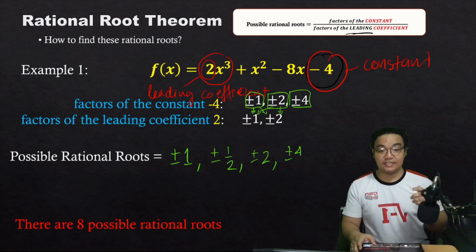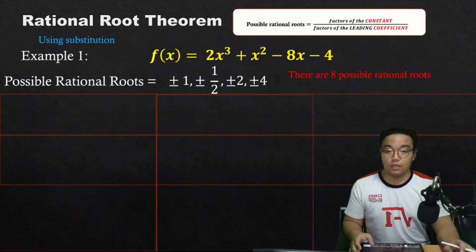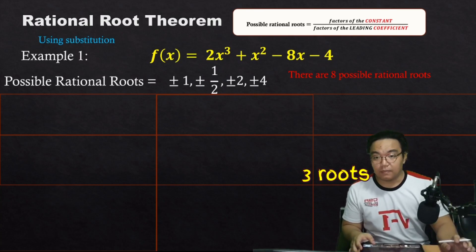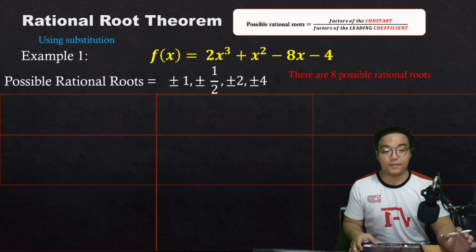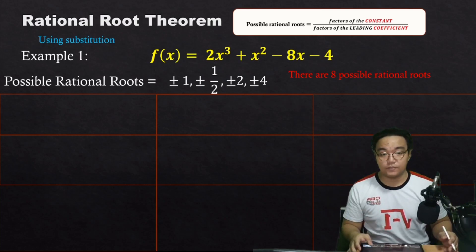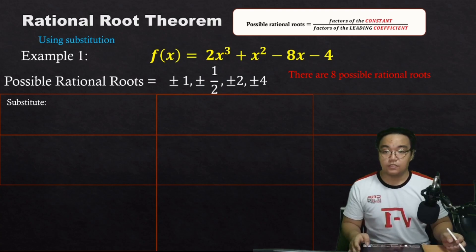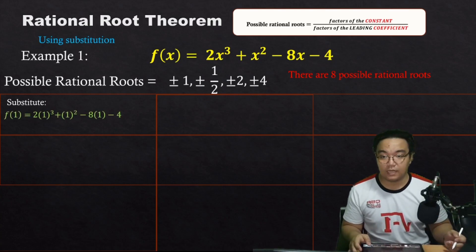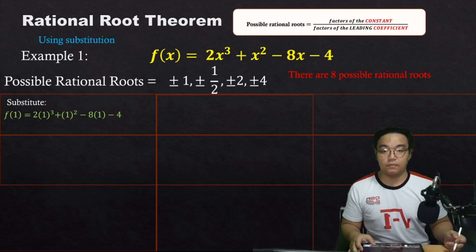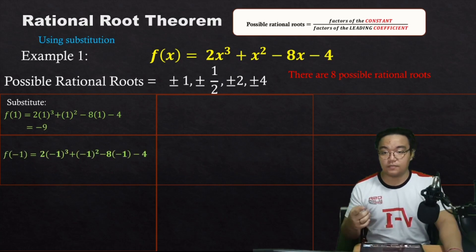Since our polynomial is degree three, at most three roots will come from these possible rational roots. To find which ones make the polynomial equal to zero, we can use the remainder theorem — substituting each possible root into the function. Starting with f(1): 2(1)³ + (1)² − 8(1) − 4 gives negative 9. Then f(−1): 2(−1)³ + (−1)² − 8(−1) − 4 gives 3.